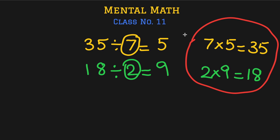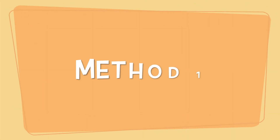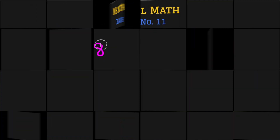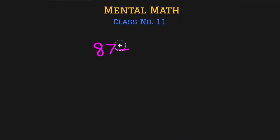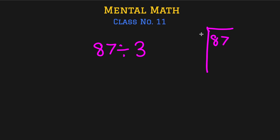Let's tackle some bigger numbers: 87 divided by 3. The thing with division is that it is very suitable for mental math, because we always divide from the left side — even in long division we start from the left hand side, and that is what our brain does too.